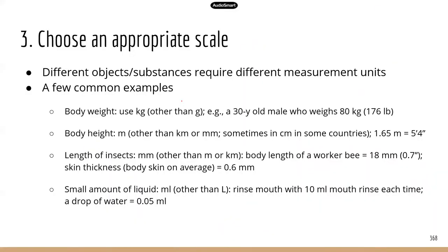Next, you need to learn how to choose an appropriate scale. Different objects or substances will require different measurement units — sometimes you need centimeters, but sometimes you need meters. ATI may give you a specific object and ask you to choose the appropriate unit for that measurement. I've made some examples to help give you a general idea of what you need to know.